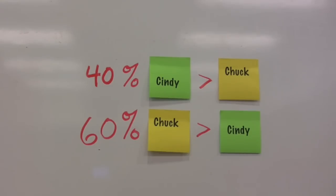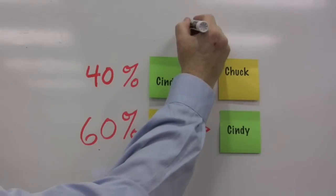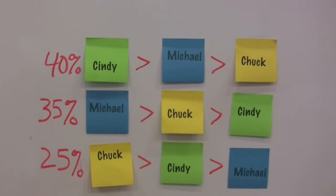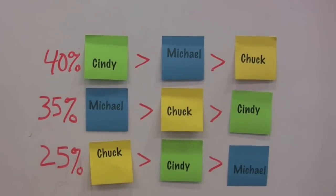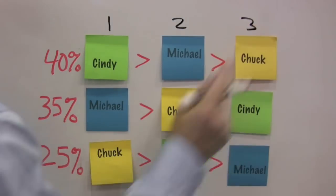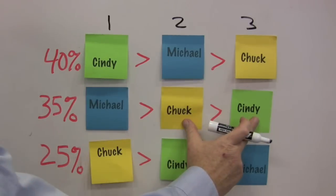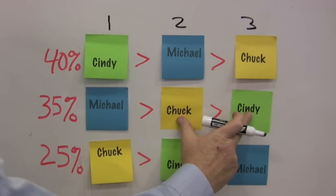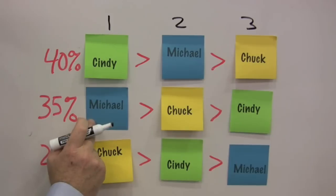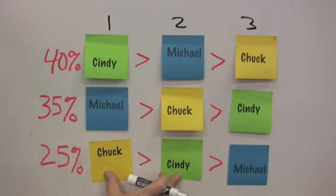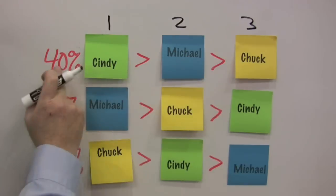We're going to run another race, but we're going to keep something true throughout the whole race. 40% of the voters prefer Cindy over Chuck. 60% prefer Chuck over Cindy. This is going to stay true throughout the whole race. But what we're going to do is introduce that third candidate. Using instant runoff voting, they were able to select first, second, and third, or who they prefer. Again, we've kept it true that 60% of the people favor Chuck over Cindy.